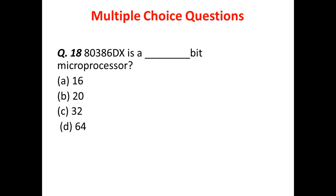Question 7: The 80386 DX is how many bits? Option A is 16 bits, Option B is 20 bits, Option C is 32 bits, and Option D is 64 bits. The answer is C — 32 bits. The 80386 DX is a 32-bit microprocessor.